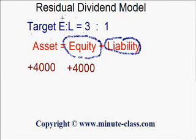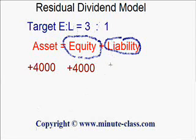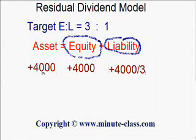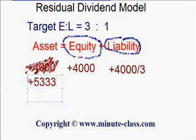However, for the company, they would like to set the target equity-to-liability ratio to be 3 to 1. So in order to achieve this goal, they must raise more debt, which is equal to $4,000 divided by 3, in order to maintain the equity-to-liability ratio. And the assets are no longer increased by just $4,000, but by $4,000 plus $4,000 divided by 3, which is $5,333.